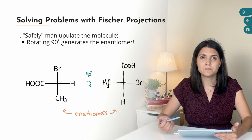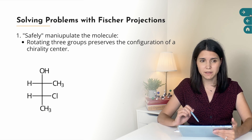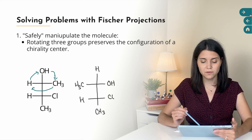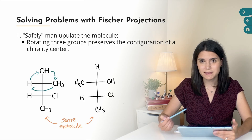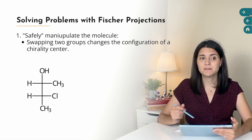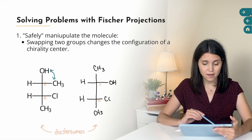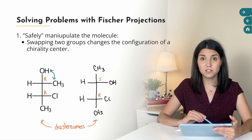You can also manipulate Fischer projections by rotating any three groups around a chirality center while keeping the other one fixed. For example, rotating H, OH, and CH3 clockwise — moving H to the top, OH to the right, and CH3 to the left — produces the same molecule, just repositioned for easier comparison. However, if you swap two groups on a chirality center of a Fischer projection, you generate the opposite configuration at that center. For example, switching the OH and CH3 on the top carbon changes it from R to S configuration, generating a diastereomer of the original compound because only one chirality center was changed.